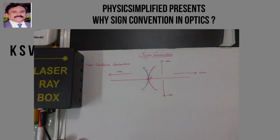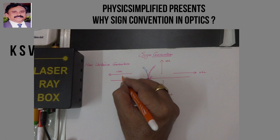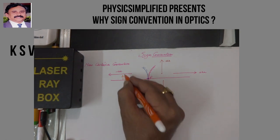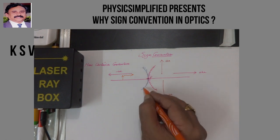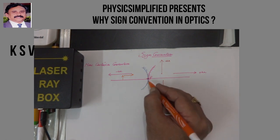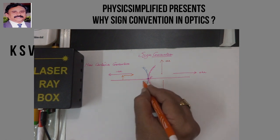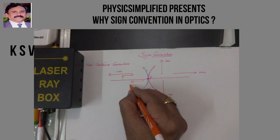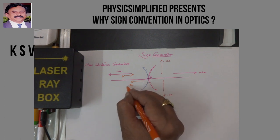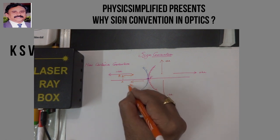If I keep an object on the left side of this mirror — any of the two mirrors — then the light rays will be in this direction towards the mirror. Now, if I want to take the distance between the pole and the object, I have to go in this direction. Therefore, as I am going opposite to the light direction, my U — the distance between the object and the pole — is negative.